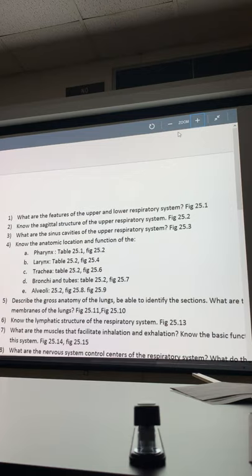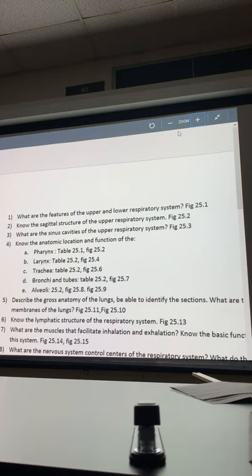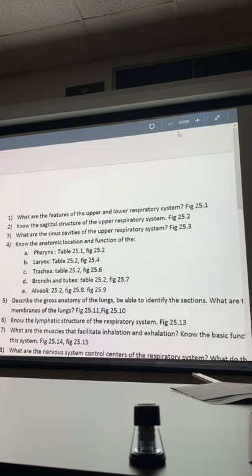The lungs are part of the lower respiratory tract while the sinus cavities are part of the upper respiratory tract. You should be able to do that. Sagittal structure of the upper respiratory - cross-section through the oral cavity knowing where the oropharynx, laryngopharynx, nasopharynx are located relative to one another. Anatomical location of pharynx, larynx, trachea, bronchi, and alveoli.